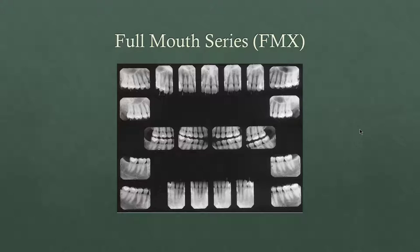A lot of times you'll take a full mouth series of x-rays, and there are varying ways to do it — there's 10 or there's 20. In this case we have 21. We might do it a little differently where we only take three of the mandibular incisor radiographs. You have periapicals along the top, the molars, the premolars, then the incisors or the anterior dentition of the maxilla up here, the bitewings right here, and then down below your mandibular teeth — the molars, premolars, and incisors in the middle. That's your full mouth series mounted correctly.